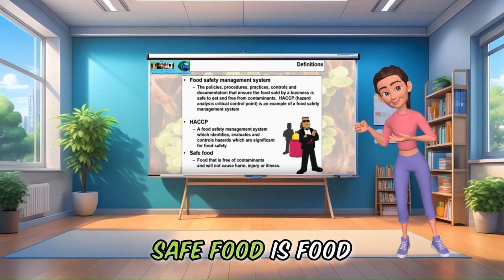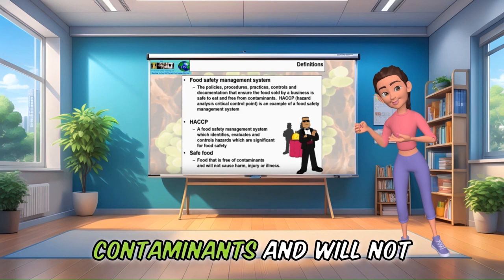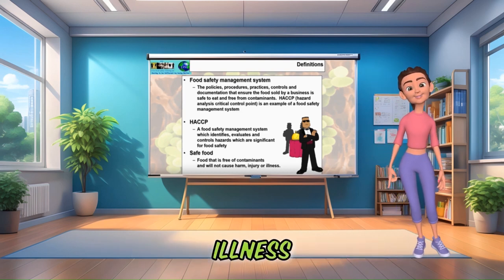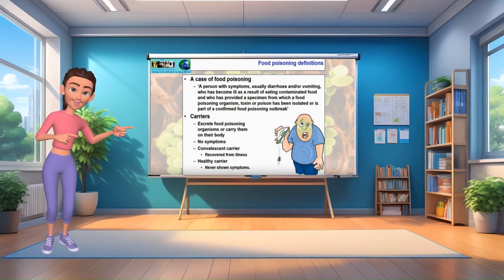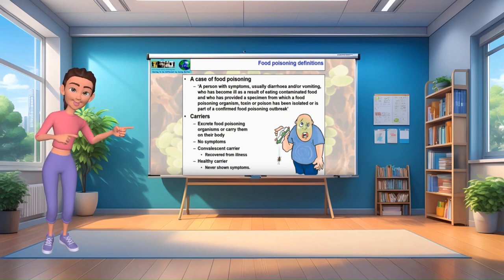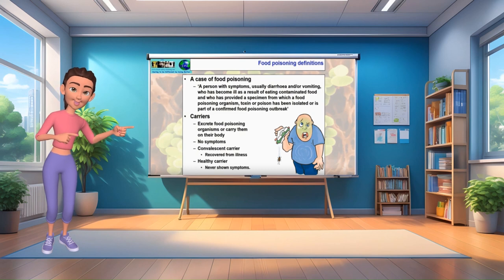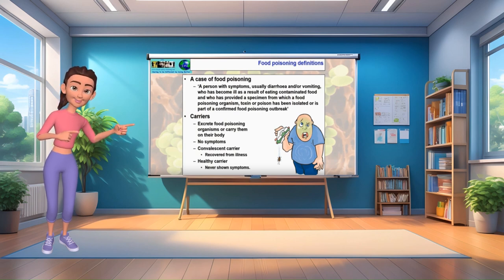Safe food is food that is free from contaminants and will not cause harm, injury or illness. A case of food poisoning is a person with symptoms — usually diarrhoea and/or vomiting — who has become ill as a result of eating contaminated food and who has provided a specimen from which a food poisoning organism, toxin or poison has been isolated, or is part of a confirmed food poisoning outbreak.